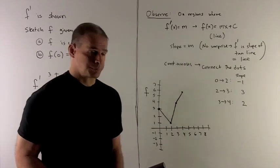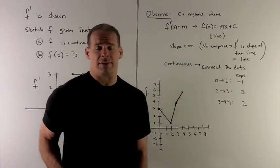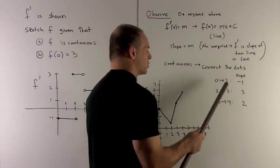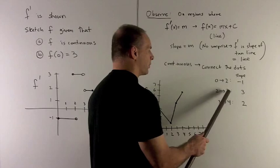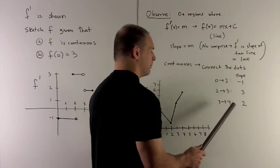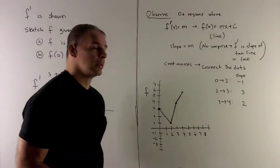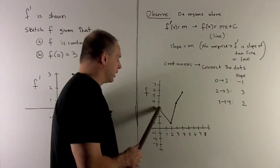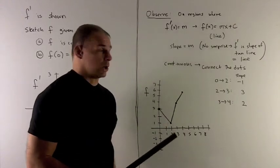Let's take a look. If I break down what the graph of f prime says, that says as I go from 0 to 2, my slope is minus 1. As I go from 2 to 3, my slope is 3. As I go from 3 to 4, my slope is 2. We're also given f of 0 is equal to 3. So I'll plot that point and now we just follow our nose.